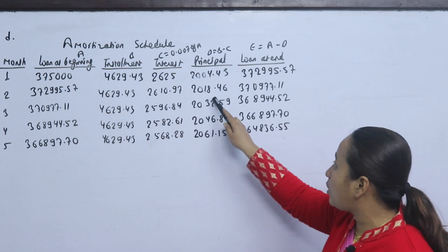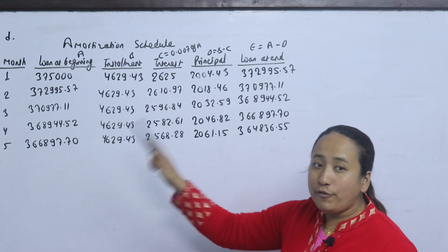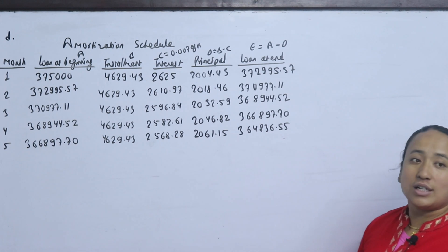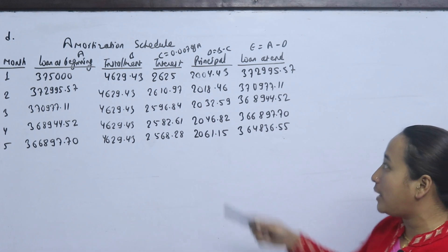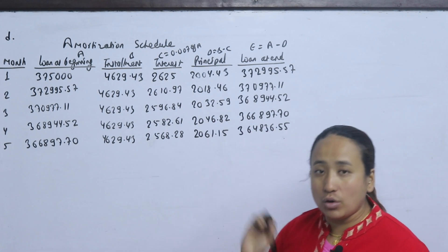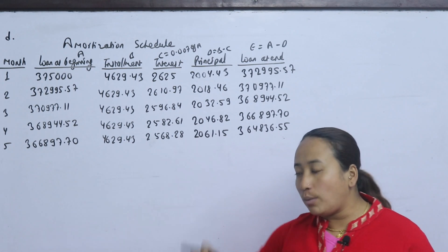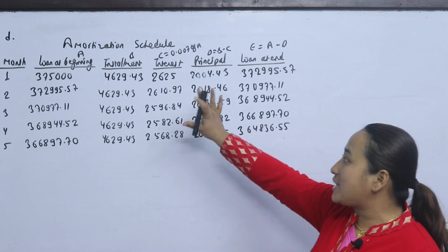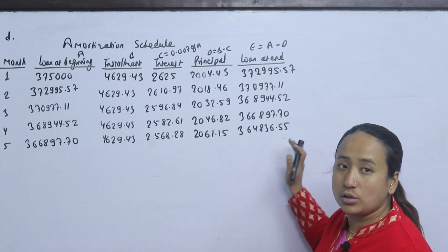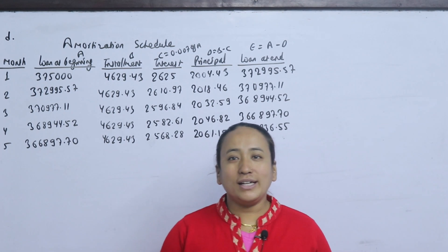At the beginning of each month, the loan balance reduces. By month 5, the ending balance is approximately Rs. 3,64,836.55. The amortization schedule continues until month 120, where the final loan balance reaches 0. The notes for today's class will be provided in the description. Thank you.